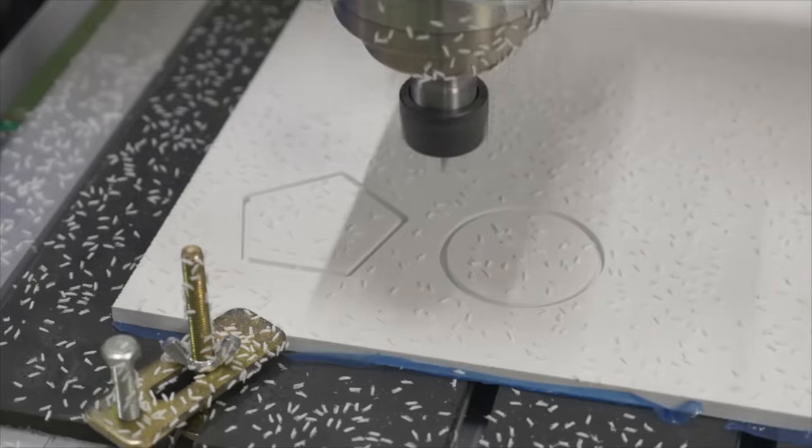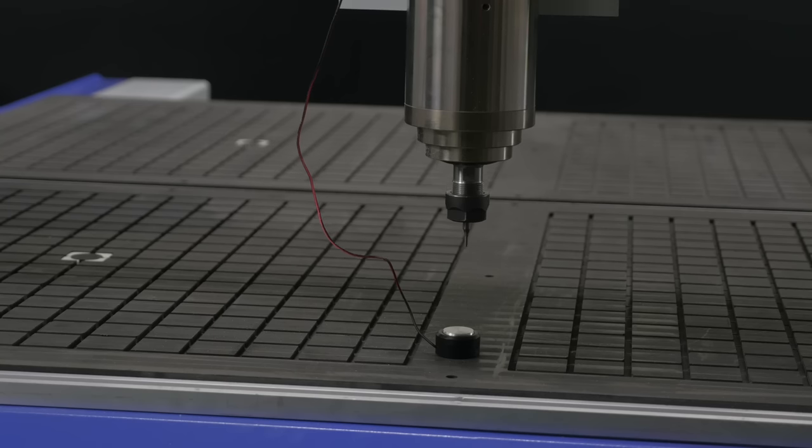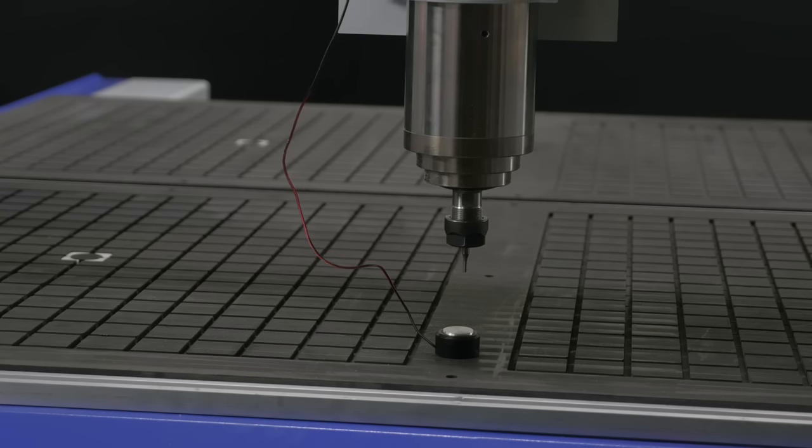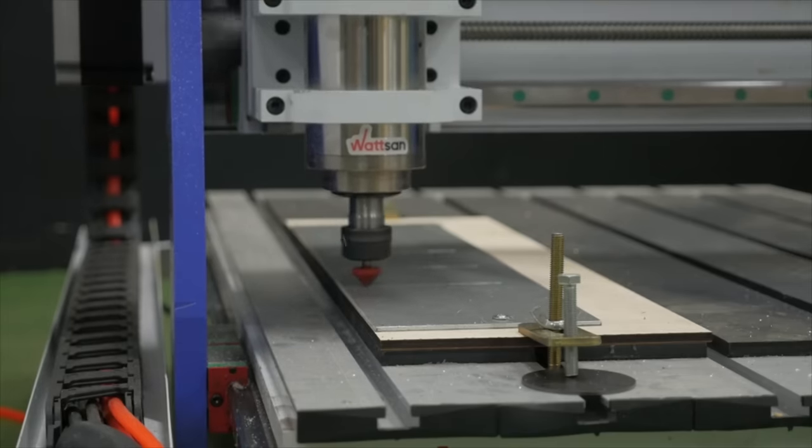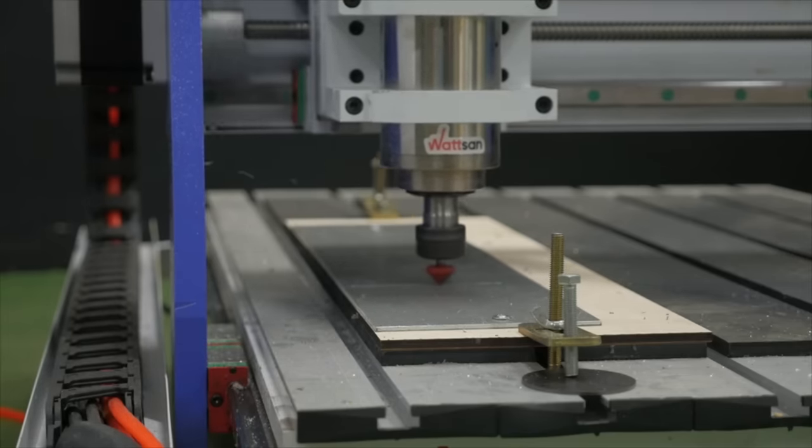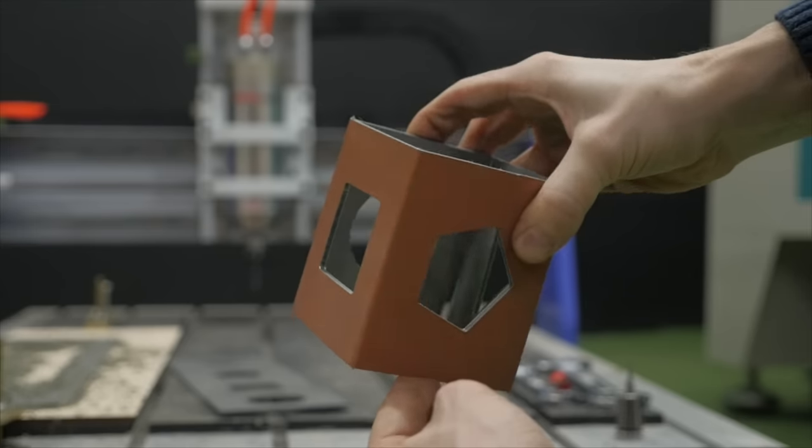Set the machine to zero before starting. This can be done manually or automatically using a special tool sensor. Now you can start machining. The machine performs the specified operations by moving the cutting tool in three dimensions.